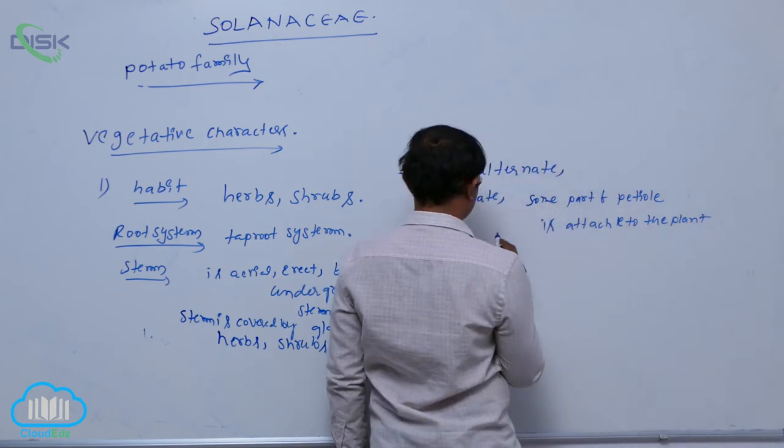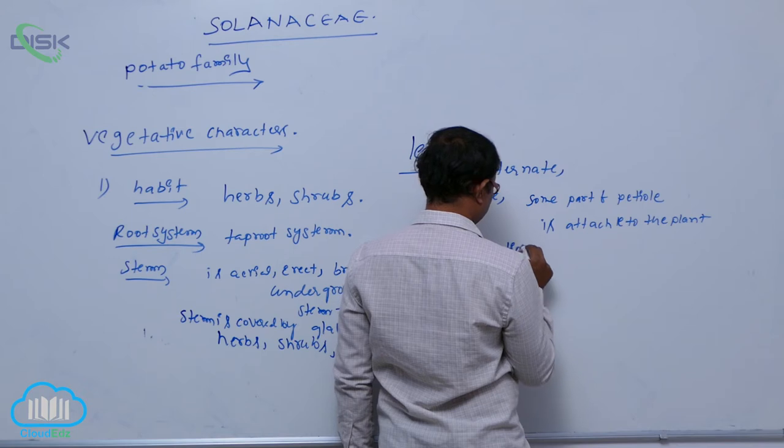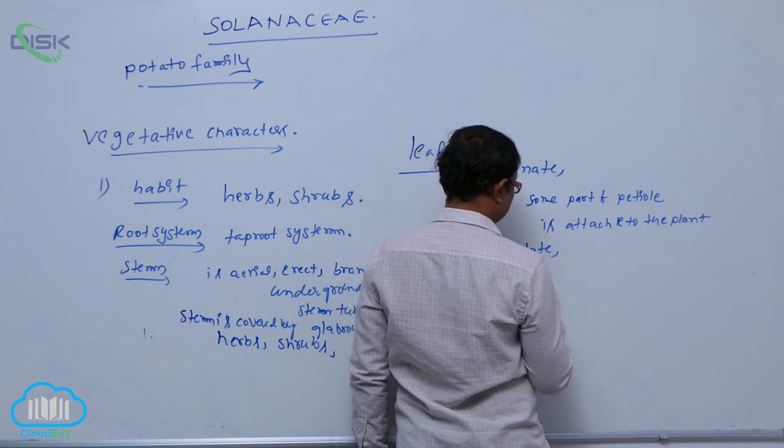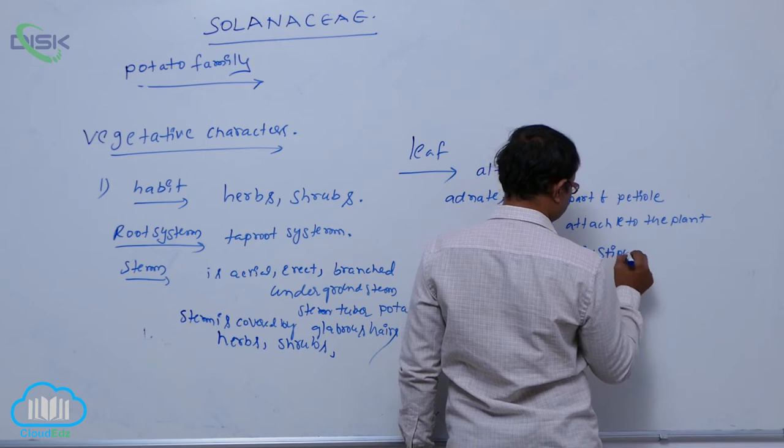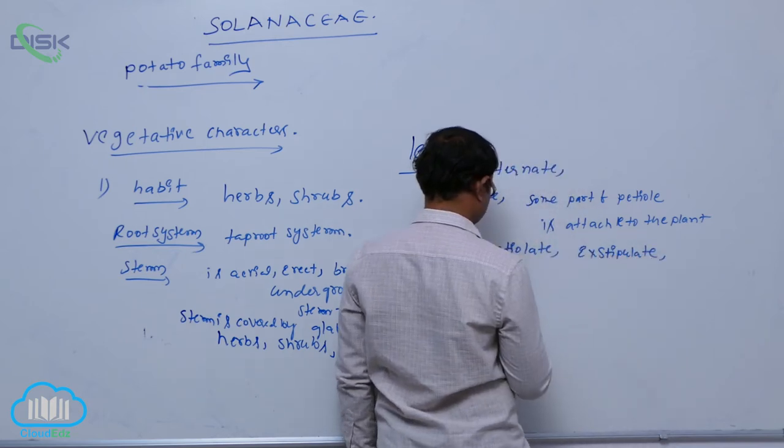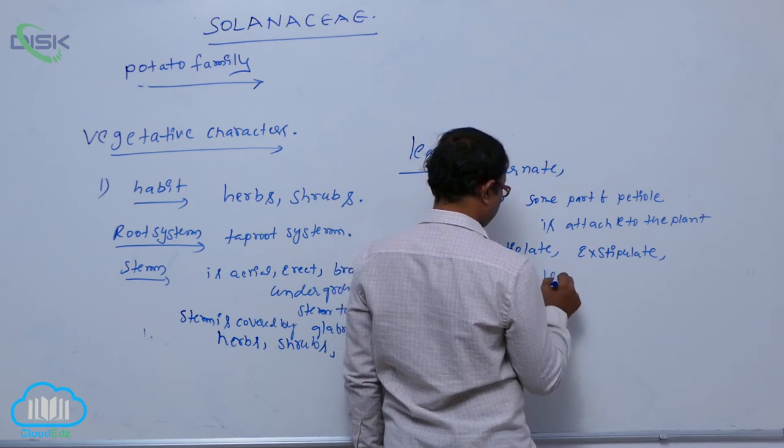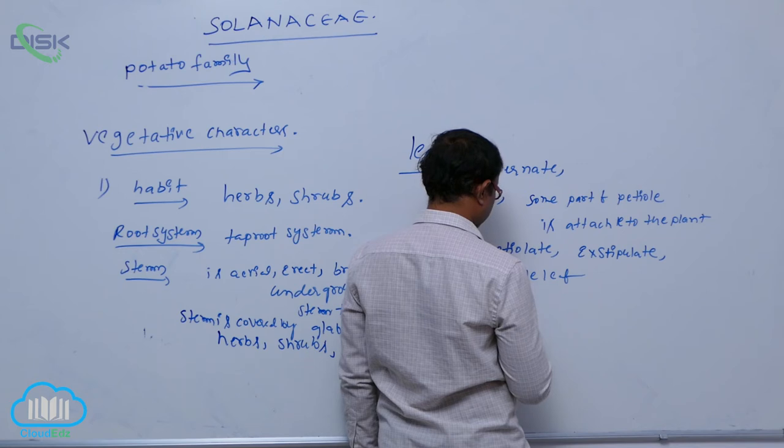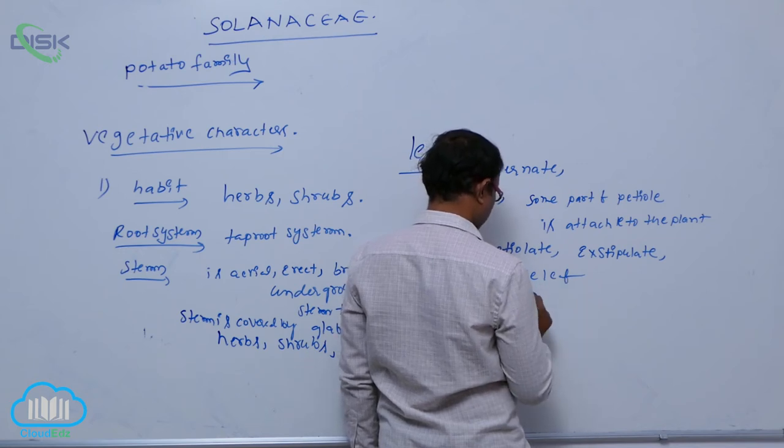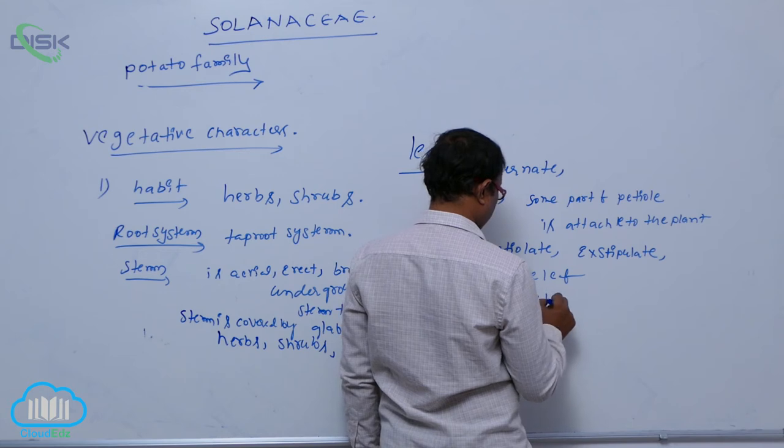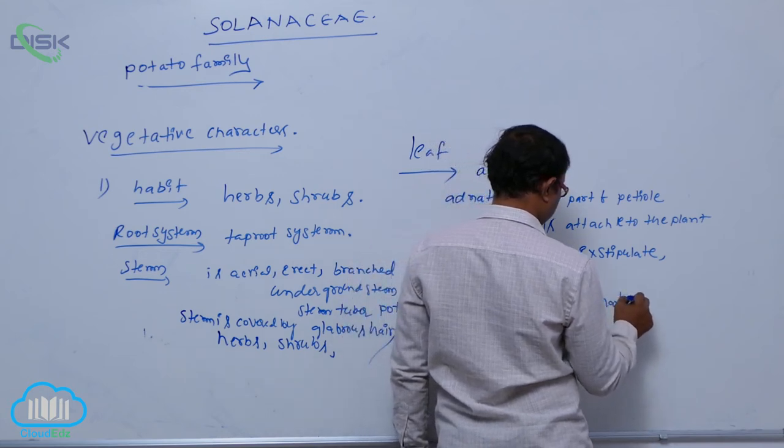Petioles are present so it's petiolate. Exstipulate means stipules are absent. Simple leaf is present while compound leaves are absent. Reticulate venation is present.